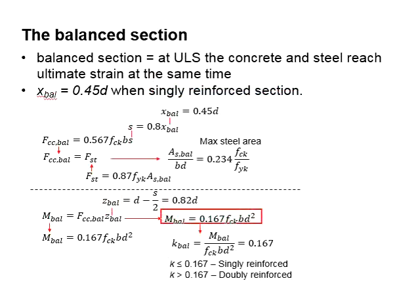This gives us the moment equation here, which if rearranged into the factor k, should be equal to 0.167. This factor k equals to 0.167 sets the boundary between the singly reinforced and doubly reinforced sections.